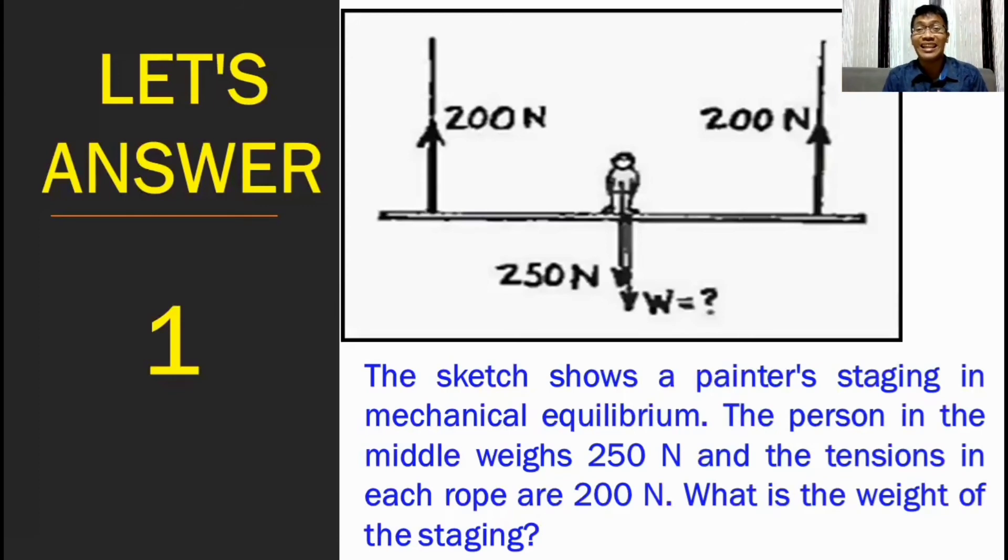Ang target natin ay mabalans ang staging or else the person will fall. And so, what do you think is the weight of the stage? In this case, we got two arrows that are pointing upward and these are the tension on the ropes. So pareho silang upward. Then, ang weight ng tao at ang weight ng staging ay pababa naman. So ang gagawin muna natin, we need to add this 2. So 200 plus 200 newton is equal to 400 newton.